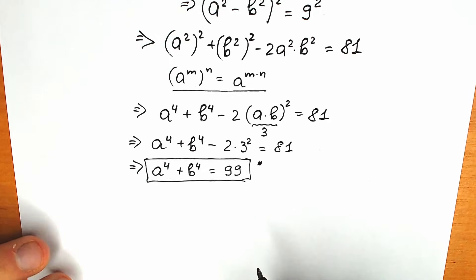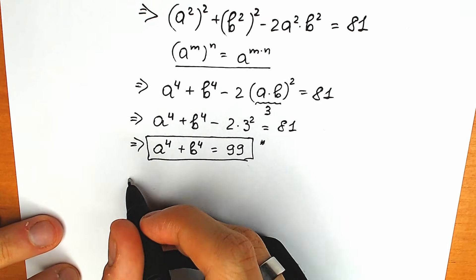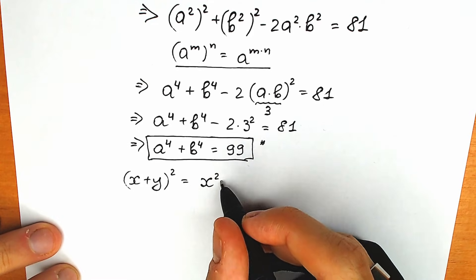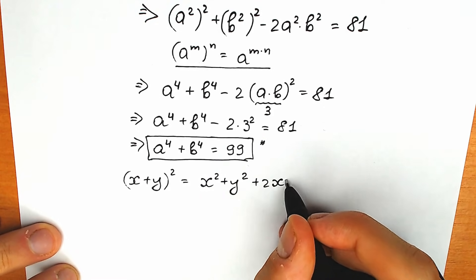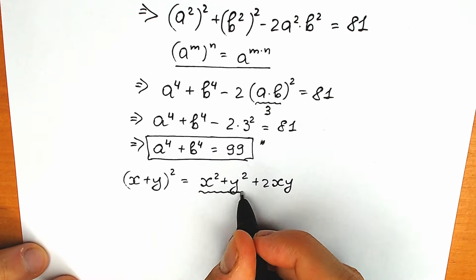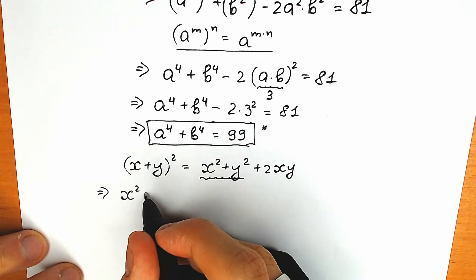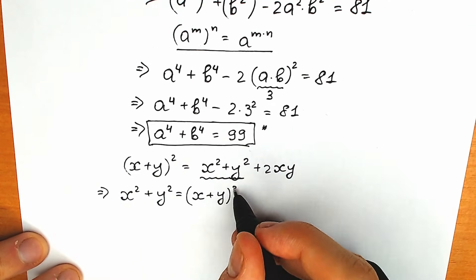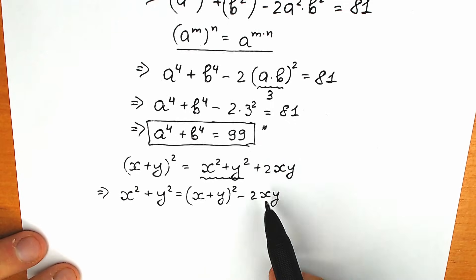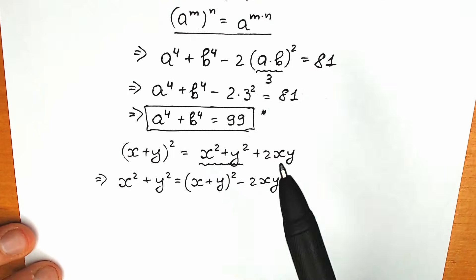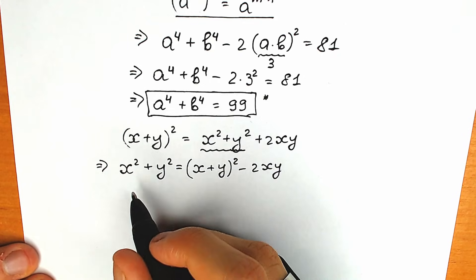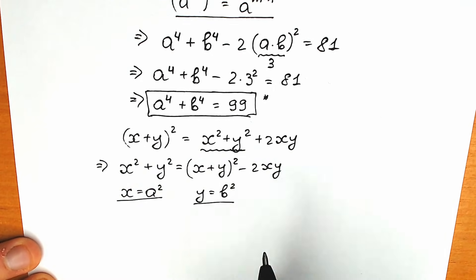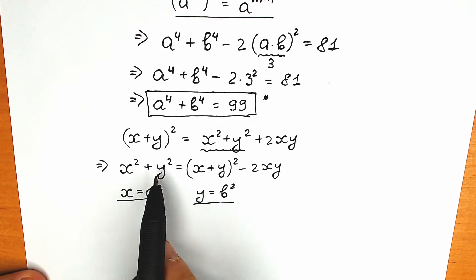What are we going to do next? I'm going to write a formula from school — everyone knows about it. We have (x plus y) to the second power, which equals x squared plus y squared plus 2xy. From here, let's express x squared plus y squared: x squared plus y squared equals (x plus y) to the second power minus 2xy. This is our general formula. Now I suggest a substitution: x equals a squared and y equals b squared.